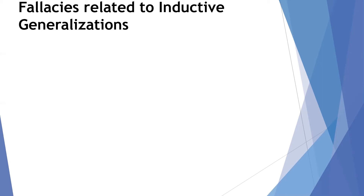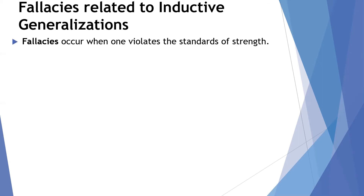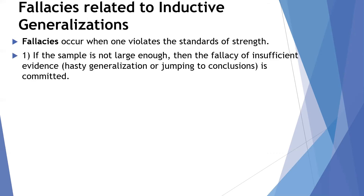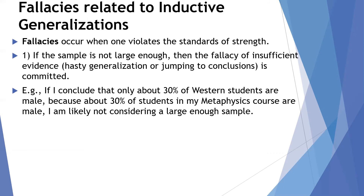There are certain fallacies related to inductive generalizations. Fallacies occur when we violate the standards of strength just mentioned. If the sample is not large enough, the fallacy of insufficient evidence is committed — sometimes called hasty generalization or jumping to conclusions. For example, if I conclude that only 30% of Western students are male because about 30% of students in my metaphysics course are male, I'm likely not considering a large enough sample — a dozen to a couple dozen students is too small to draw conclusions about several thousand students.